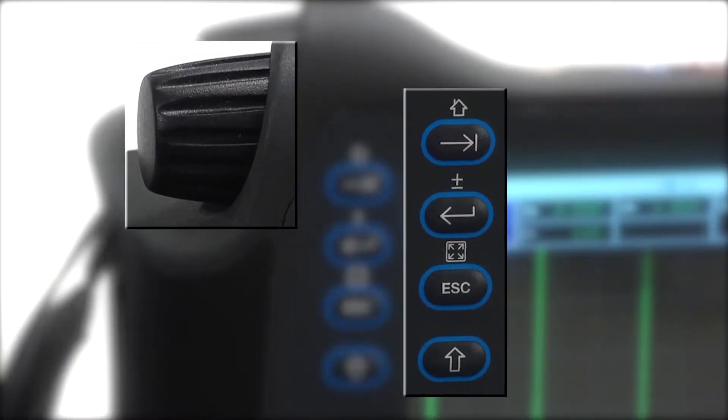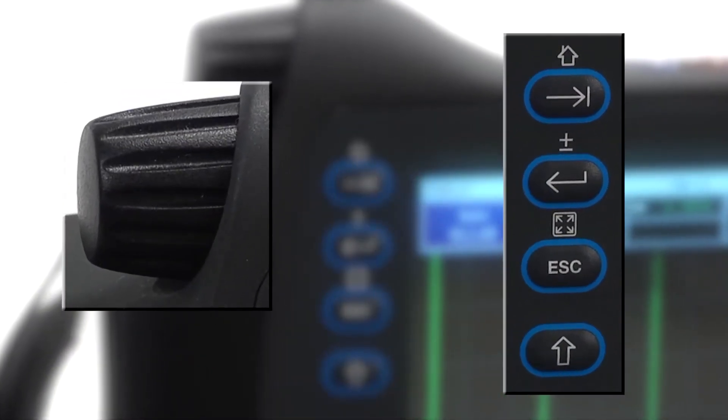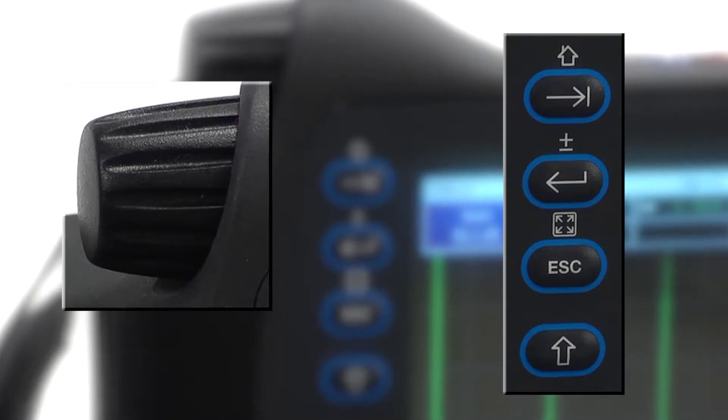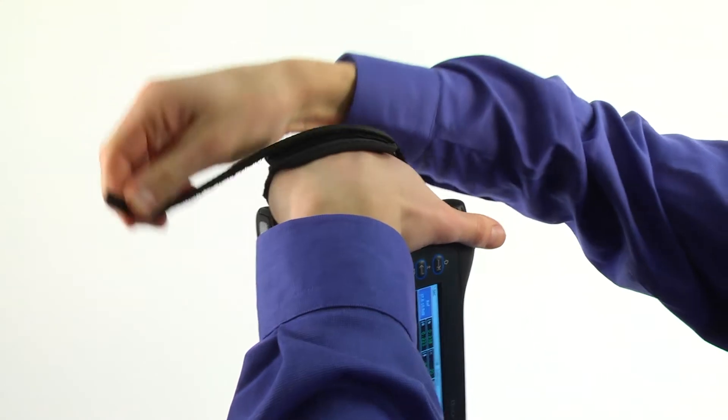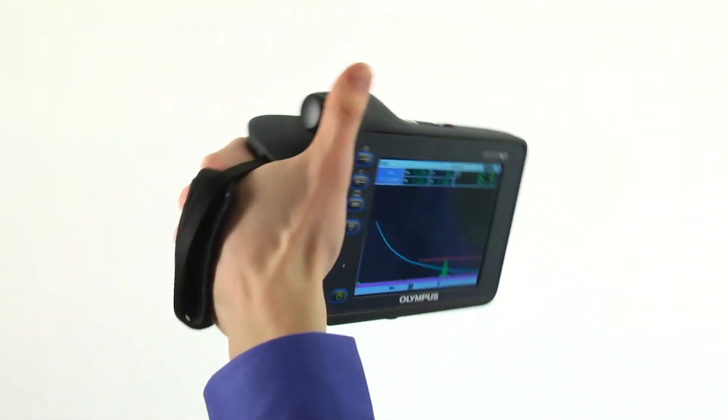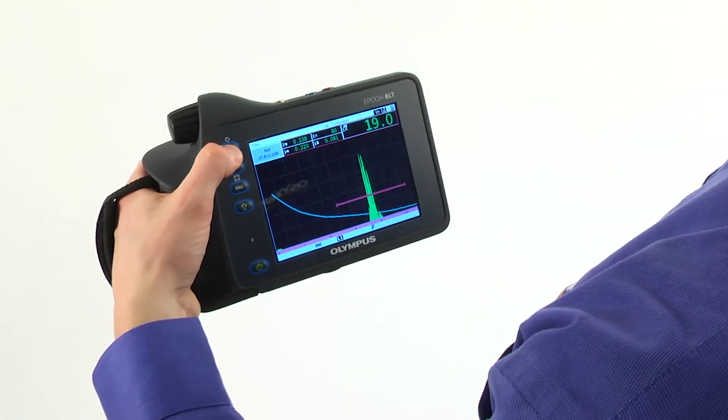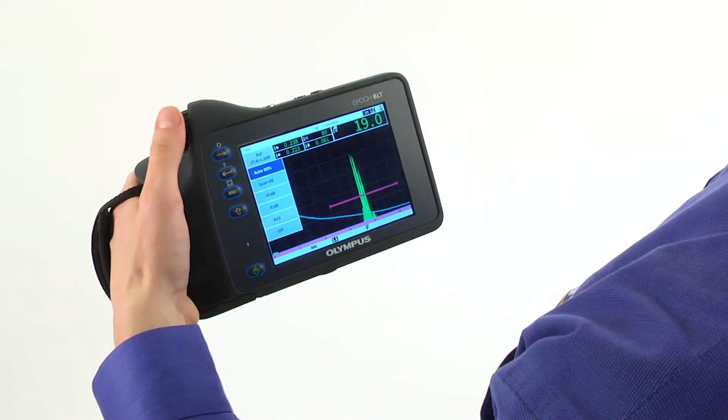A simple four-button control area and rotary knob drive the instrument's intuitive user interface. The position of the controls, coupled with a comfortable adjustable hand strap and rugged hand grip area, make it easy to control the device and navigate the menu using just your thumb.